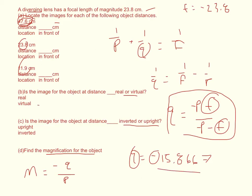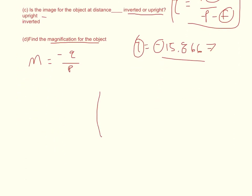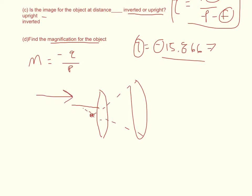Since Q is negative, it's a virtual image. Because M is a positive number, it's upright. The image location will be in front of the lens. So if I have a lens here and light scatters through it, the image appears to be behind — or rather, in front of the lens on the same side as the incoming light. Where the light comes from is the front face, and where it passes through is the back. If the image appears on the front side, it's virtual because light doesn't actually pass through that point — it just looks like it does.